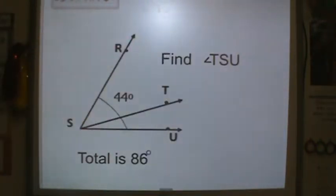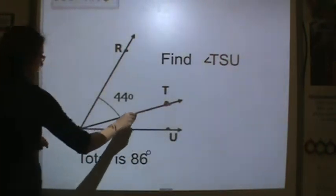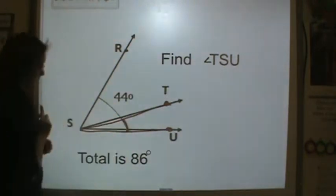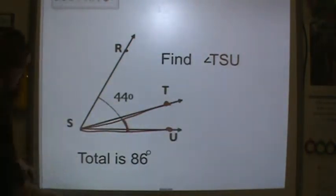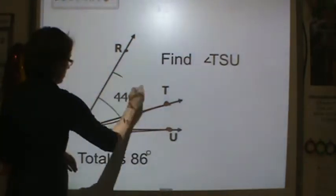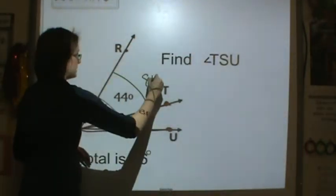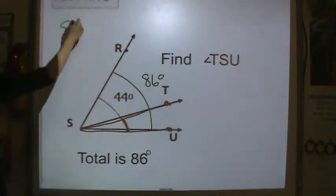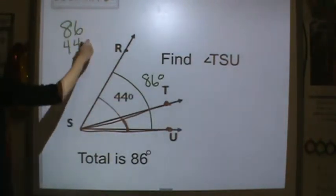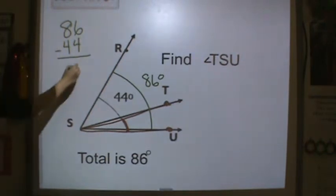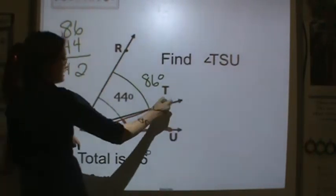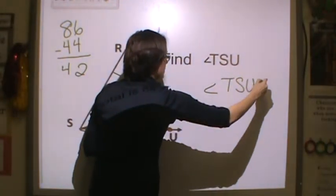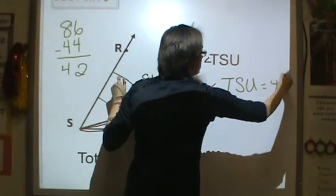Now I'm to find TSU. So here's T, here's S, and here's U. So the angle I'm to find is right here. It's telling me that the total, the entire angle amount right here is 86 degrees. I already have one part of that, which is 44. I will take 86, subtract 44 to find the missing amount. So TSU, angle TSU equals 42 degrees.